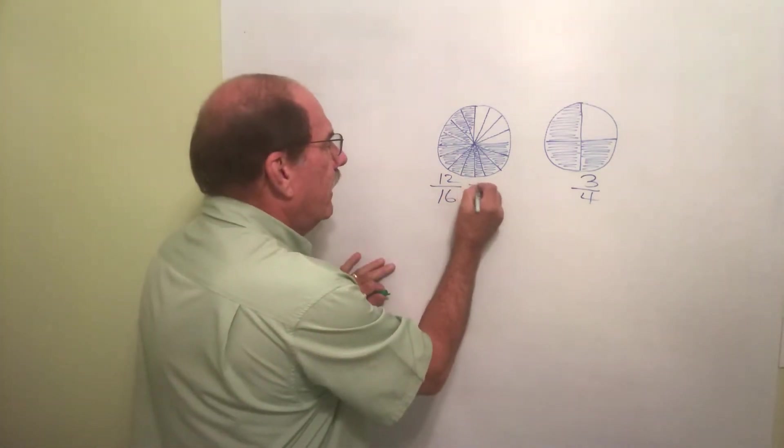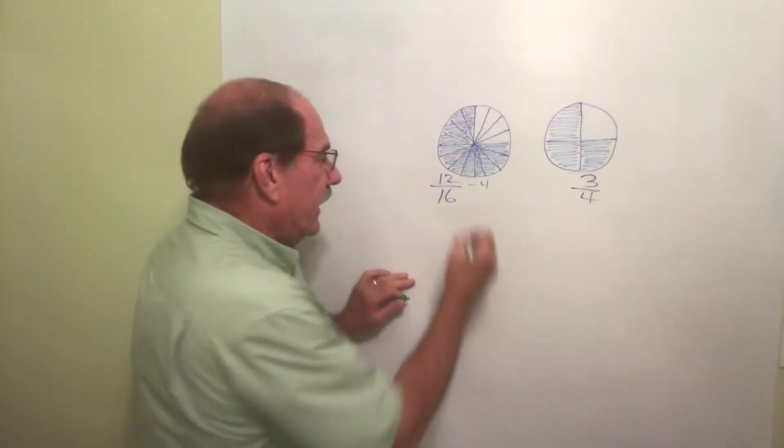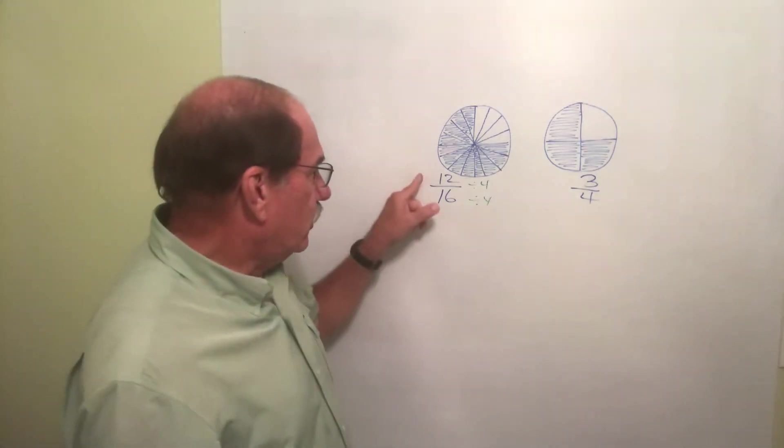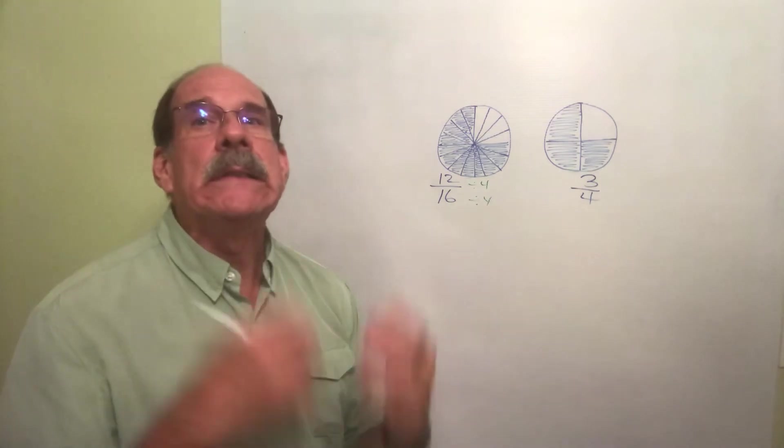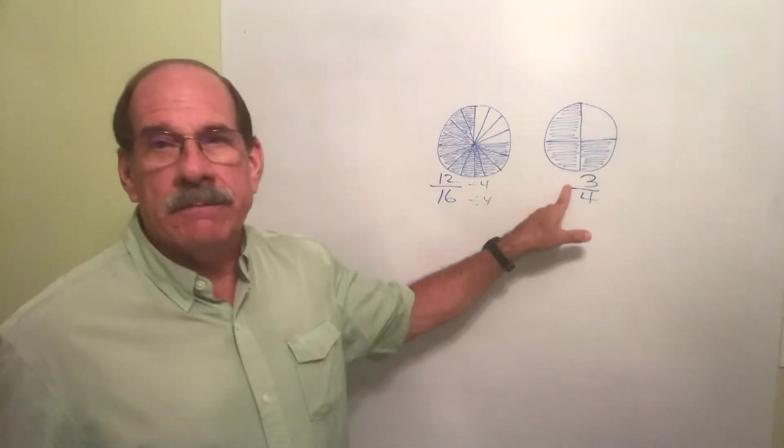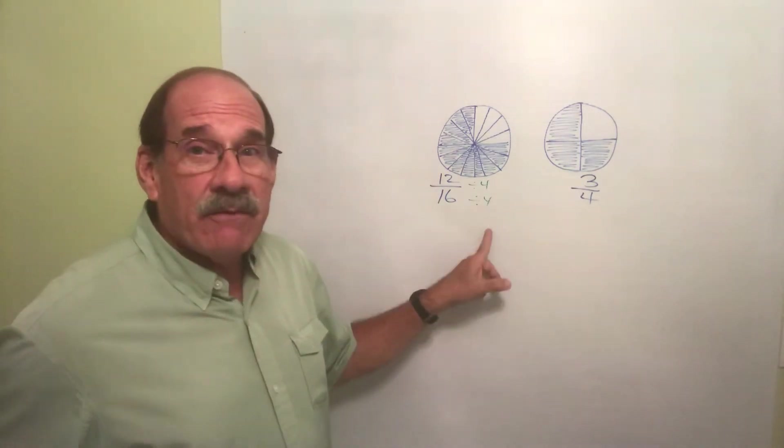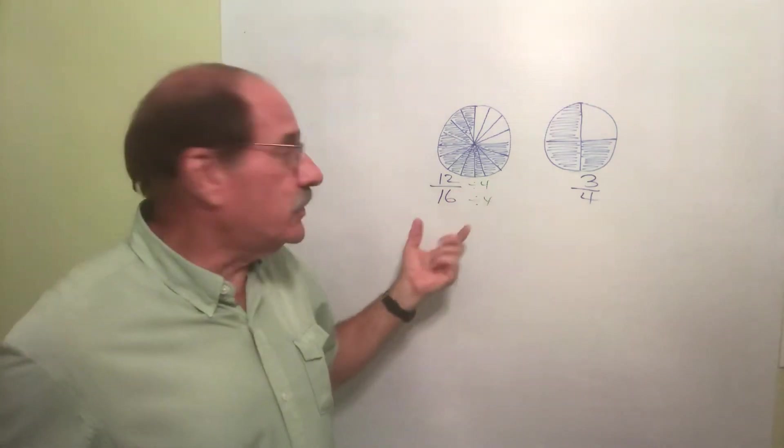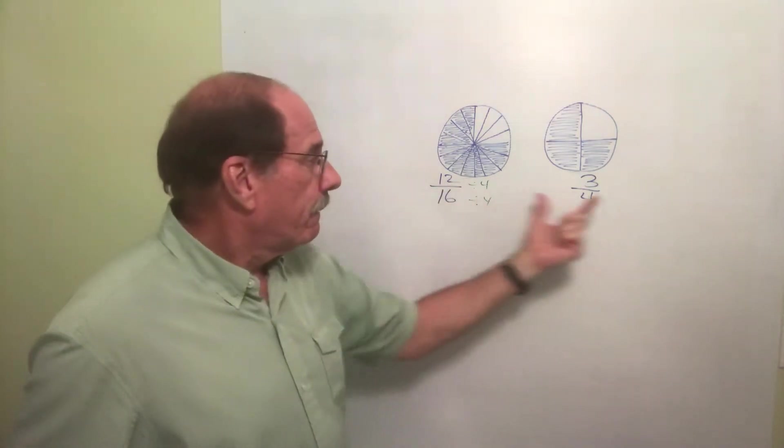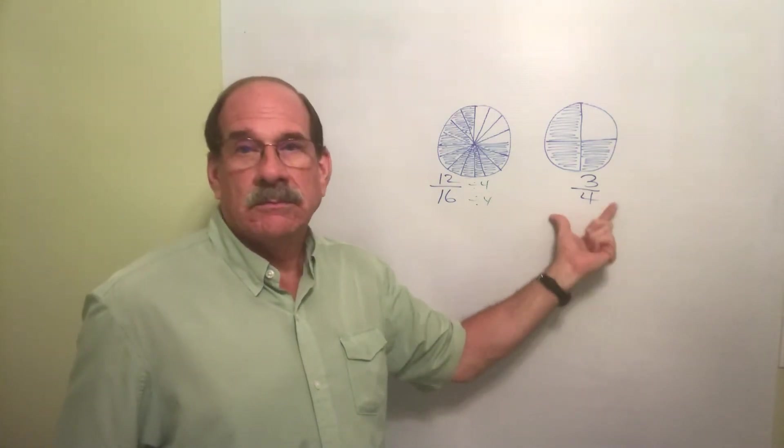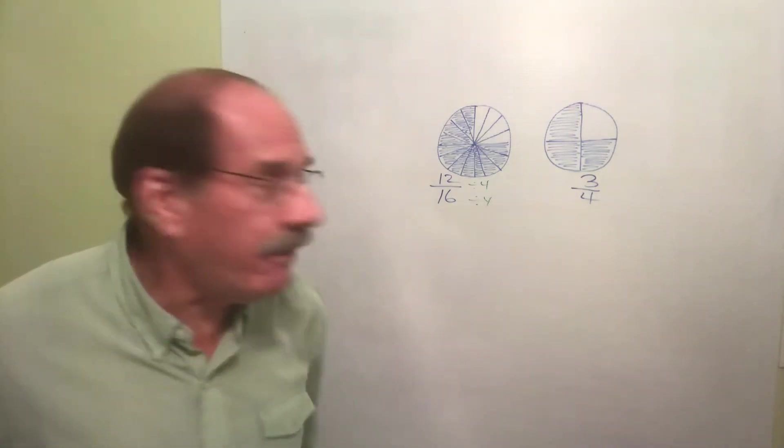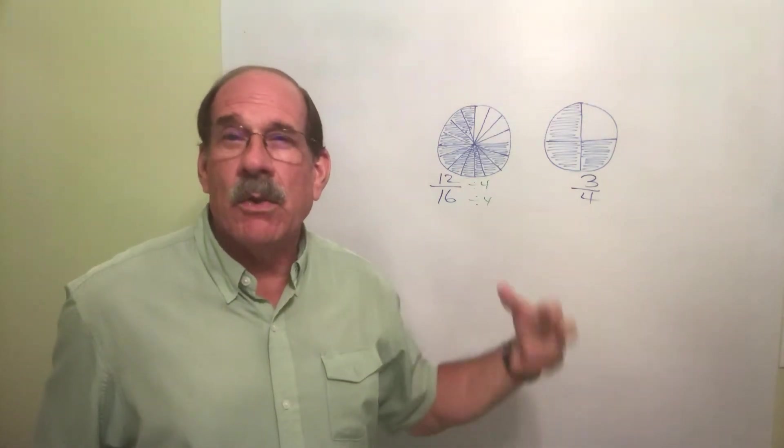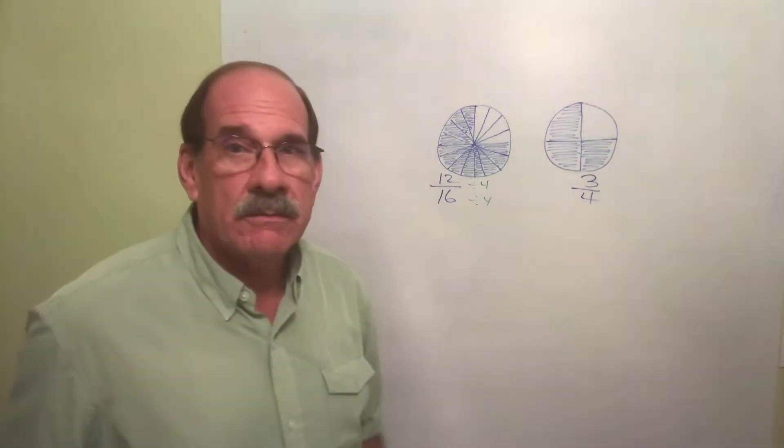So I take 12 and divide that by 4, and I take 16 and divide it also by 4. 12 divided by 4 is 3, 16 divided by 4 is 4. So I have reduced 12/16ths into its smallest amount - I've reduced it all the way, as low as it'll go: 3/4.